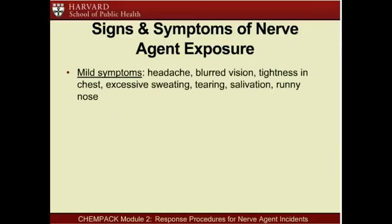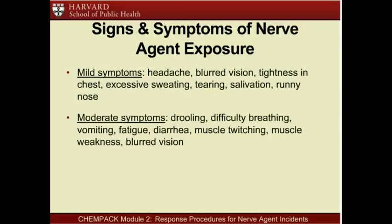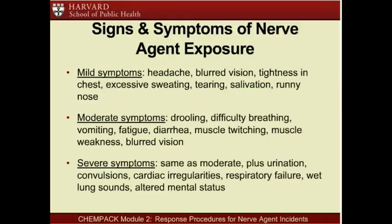Mild symptoms of nerve agent exposure include headache, blurred vision from pinpoint pupils, tightness in chest due to smooth muscle constriction, excessive sweating, tearing, salivation, and unexplained runny nose. Moderate symptoms include drooling, difficulty breathing, vomiting, fatigue, diarrhea, muscle twitching, muscle weakness, and blurred vision from pinpoint pupils. Severe symptoms include all moderate symptoms plus involuntary urination, convulsions, cardiac irregularities, respiratory failure, wet lung sounds, and altered mental status.